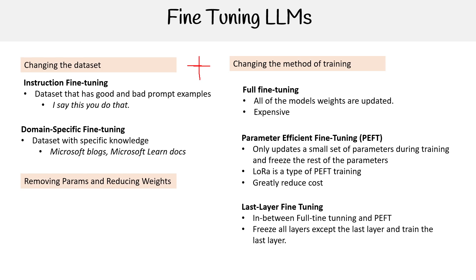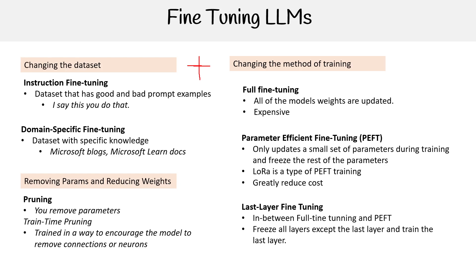Another thing we can do is pruning — this is where you're removing parameters. People might want to do this to make the model smaller and more efficient, because removing parameters means less compute or faster processing, with some trade-offs. There are two ways to do this: train-time pruning, where you encourage the model to drop or remove connections or neurons during training; and post-training pruning, which is basically modifying the model weights file that's outputted. So there are a lot of options.